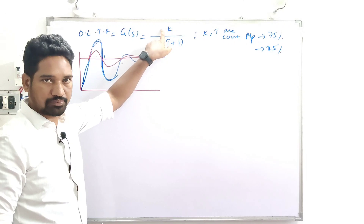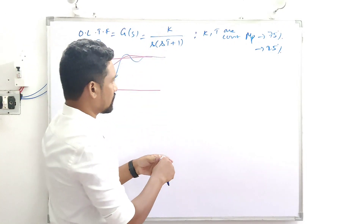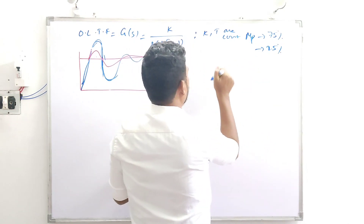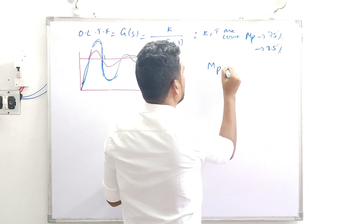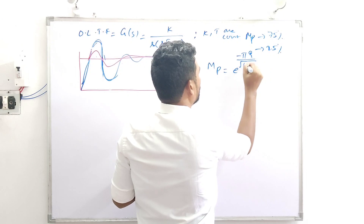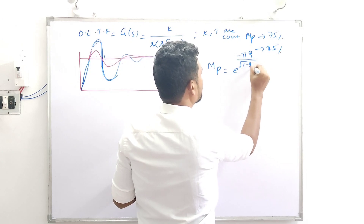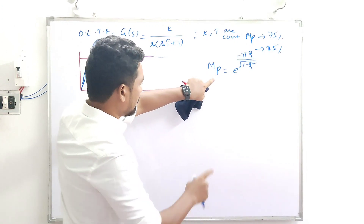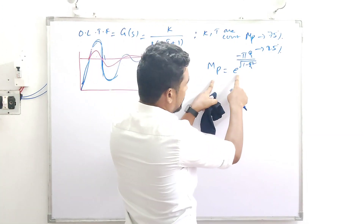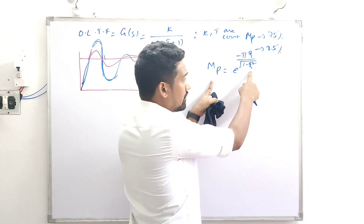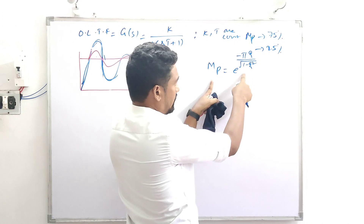Let's recall the maximum overshoot expression. Mp = e^(−πζ / √(1 − ζ²)). This means Mp depends on ζ (the damping ratio). The value of Mp depends entirely on ζ, as this expression tells us.